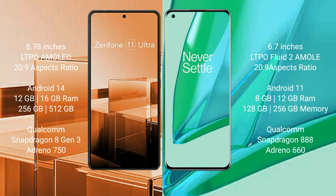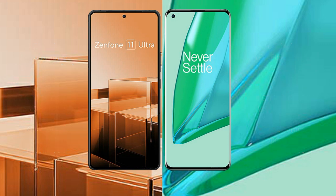The OnePlus 9 Pro comes with 8GB or 12GB RAM, 128GB or 256GB internal storage, a Qualcomm Snapdragon 888 processor, and an Adreno 660 GPU.